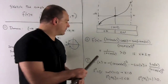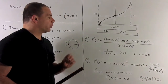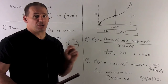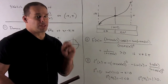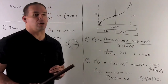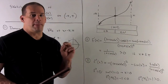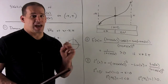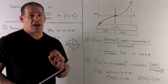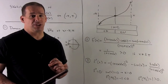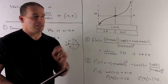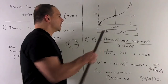Using test points minus π/2 and π/2: plugging in π/2, sin(π/2) = 1 and cos(π/2) = 0, giving a positive value — so the function is concave up on (0, π). Plugging in minus π/2, sin(−π/2) = −1 and cos(−π/2) = 0, giving a negative value — so the function is concave down on (−π, 0).